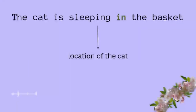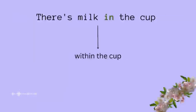The cat is sleeping in the basket. With the use of 'in' we are focusing on the location of the cat — so where is the cat? The cat is in the basket. There is milk in the cup. We are focusing on the milk — where is the milk? It is in the cup.